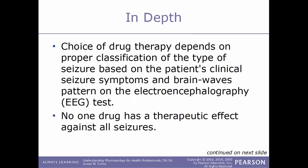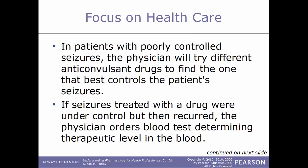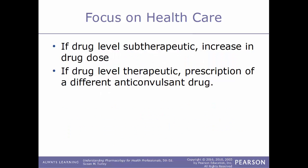The choice of drug therapy depends on proper classification of the seizure type based on clinical symptoms and EEG brainwave patterns. There is no one drug effective for all seizure types; some drugs effective for one type may provoke another. For poorly controlled seizures, the physician may try different anticonvulsants. If seizures reoccur, a blood test determines therapeutic drug levels — if sub-therapeutic, the dose is increased; if therapeutic, a different anticonvulsant is prescribed.